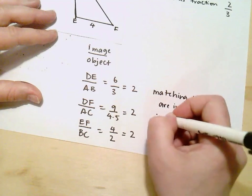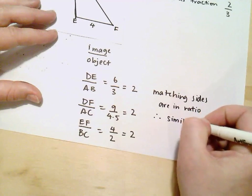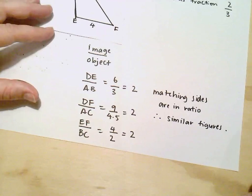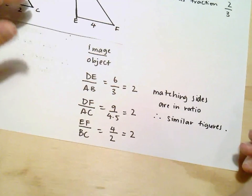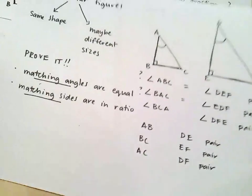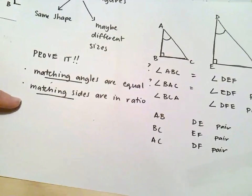So therefore, these are similar figures. So that brings us to the end of this video. It was all about proving that two shapes are similar by showing that either the matching angles are equal or the matching sides are in ratio.